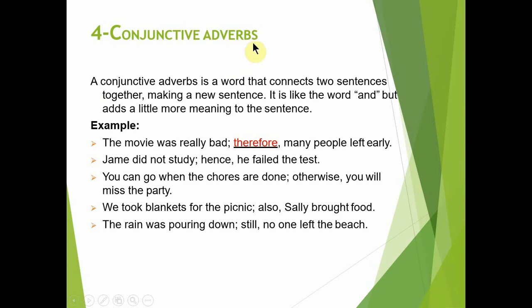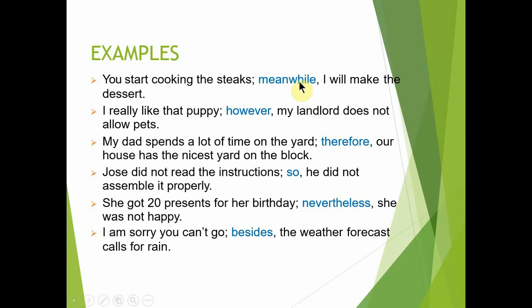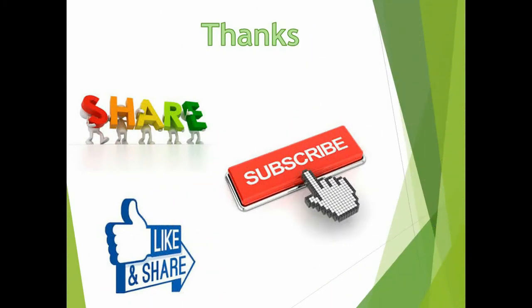Conjunctive adverbs وہ words ہوتے ہیں جو دو sentences کو ملاتے ہیں اور ملا کر ایک نیا sentence بناتے ہیں — and کی طرح لیکن یہ meaning میں مزید اضافہ کر دیتے ہیں۔ جیسے 'The movie was really bad; therefore many people left early'۔ Therefore، hence، otherwise، also، still، meanwhile، however، so nevertheless، besides — یہ تمام conjunctive adverbs ہیں۔